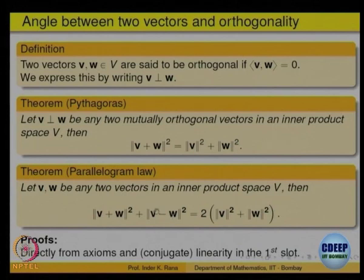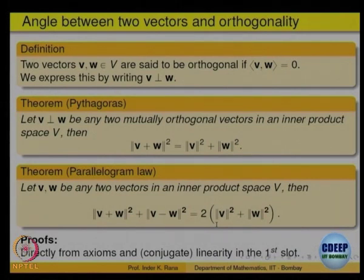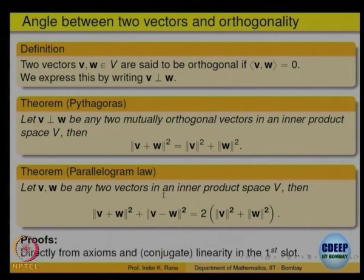Similarly, the parallelogram law holds — write both sides as dot products, expand, and the terms cancel out to give the result. The proofs are straightforward: write the norm squared as the dot product of that vector with itself and expand.